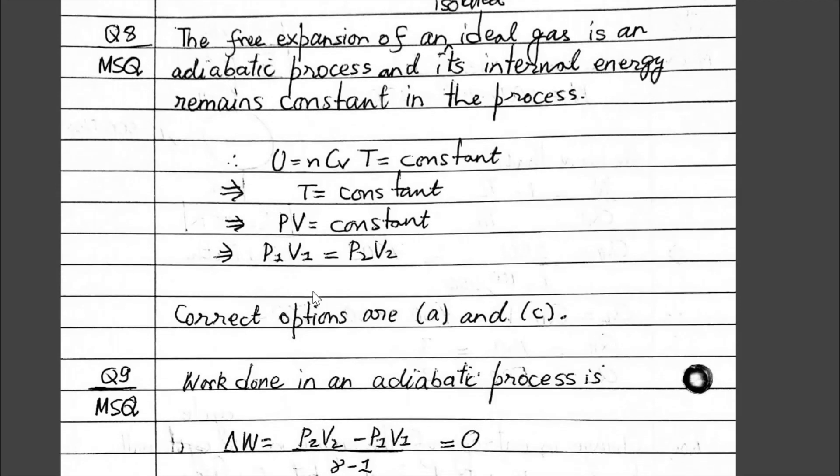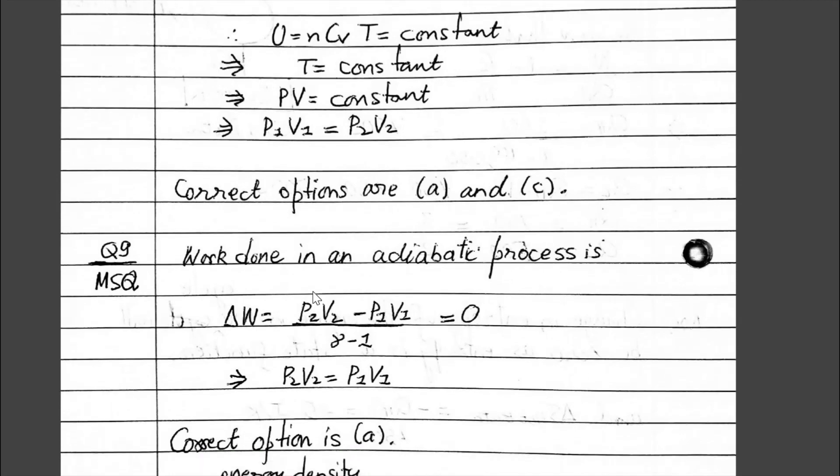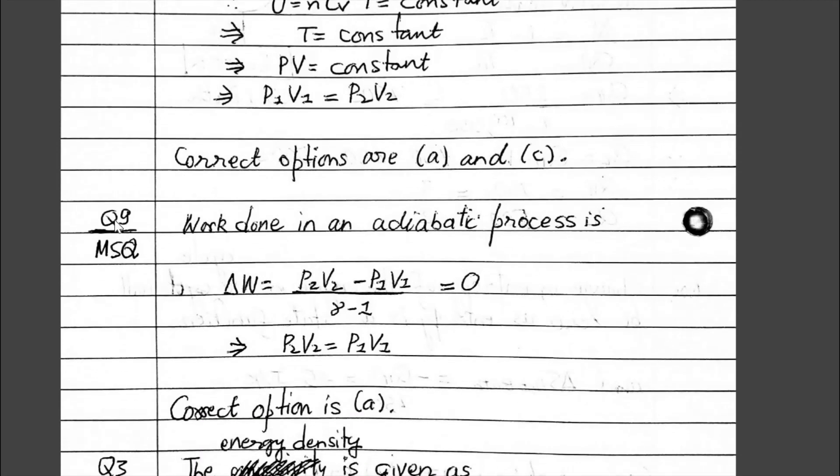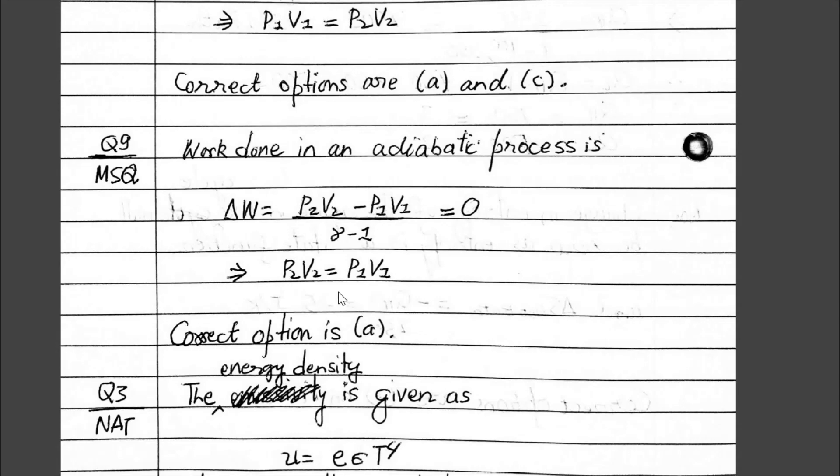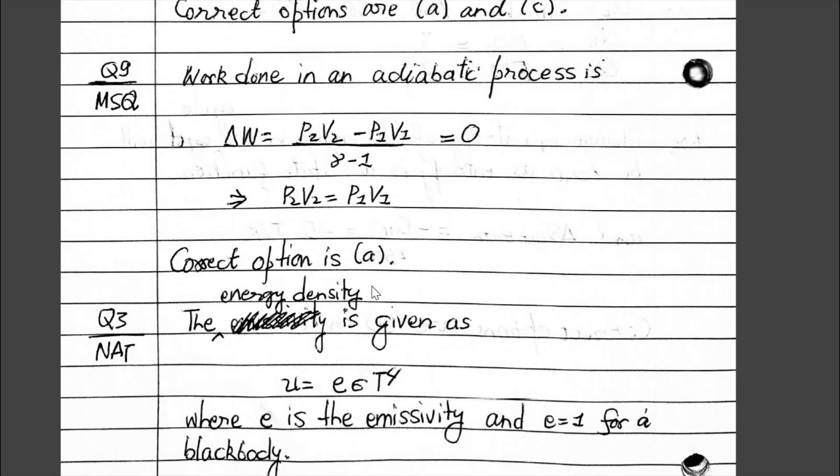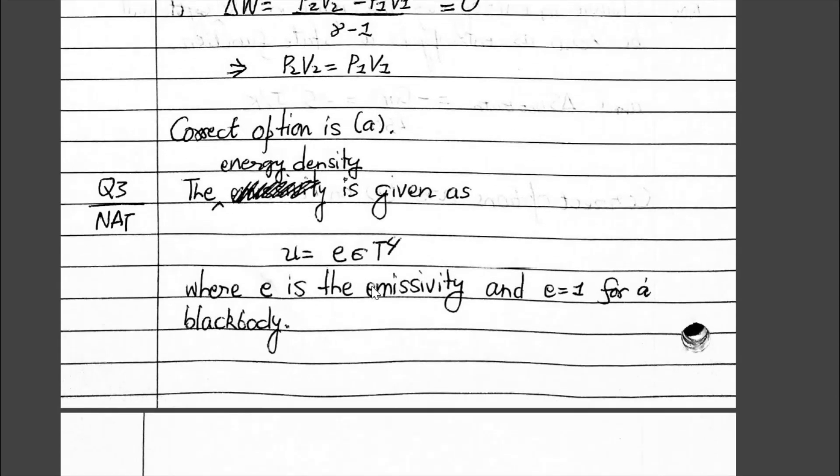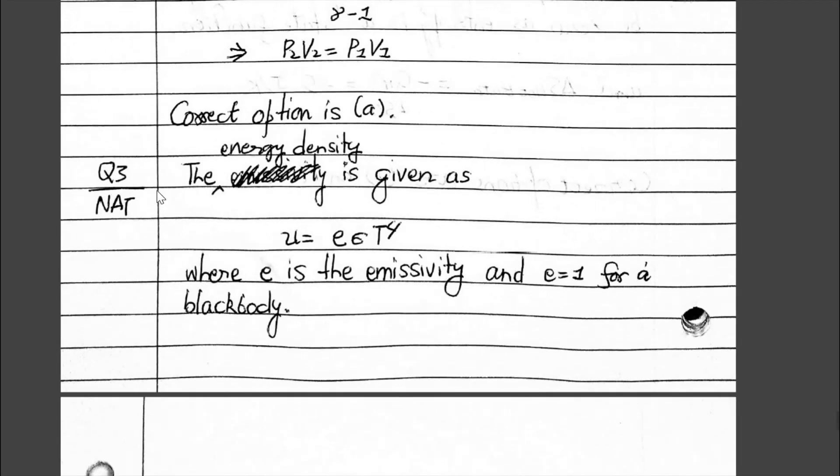Then MSQ question 9, also from the thermodynamics section. The correct option is A, that is P2V2 equals P1V1.